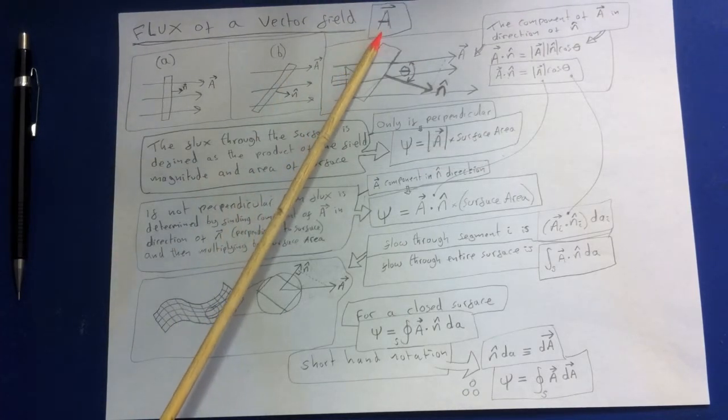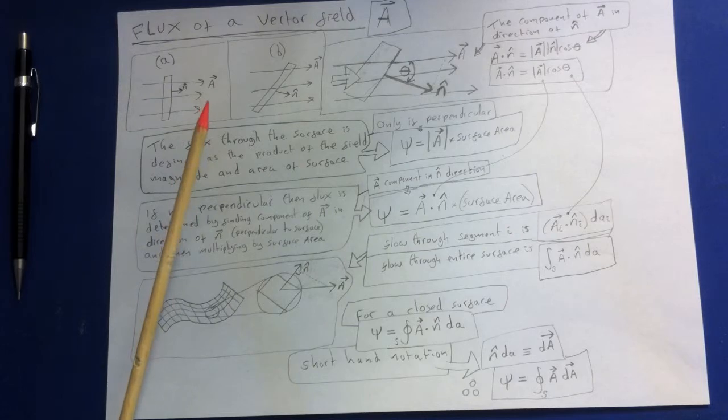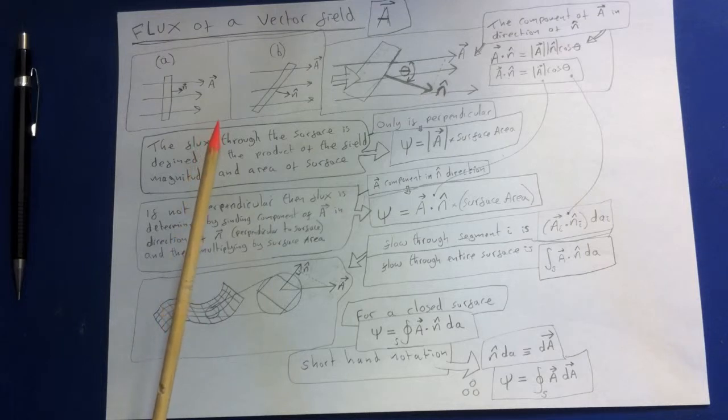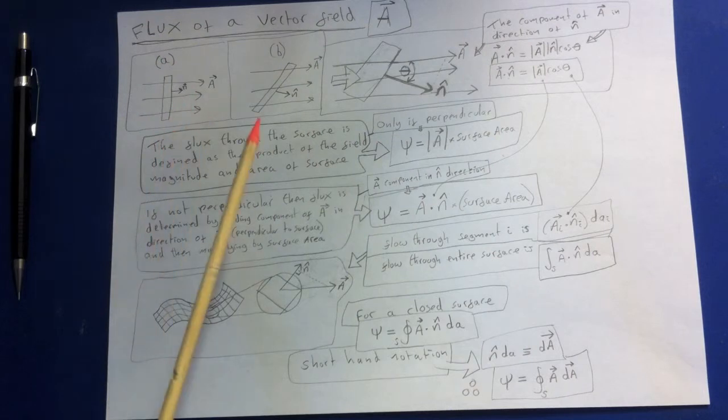The vector A here represents a vector field, which is a distribution of quantity in space having both magnitude and direction. Speed and direction of the flow of fluid at each point in a stream is an example of a vector field. The force exerted at each location per unit charge is another example of a vector field.